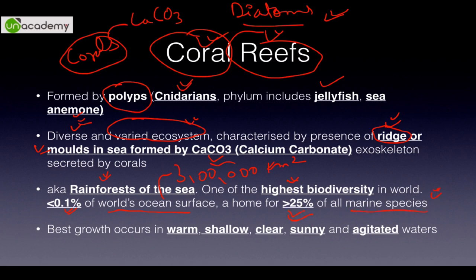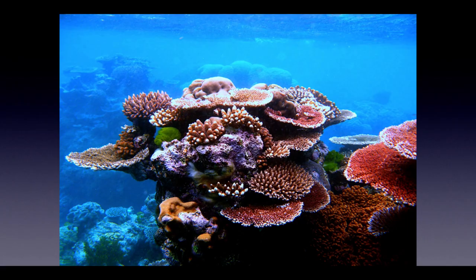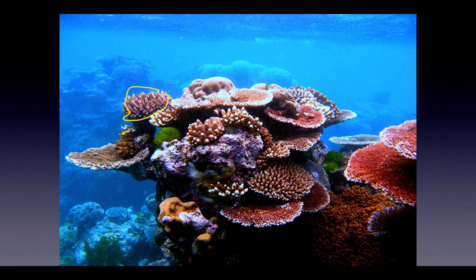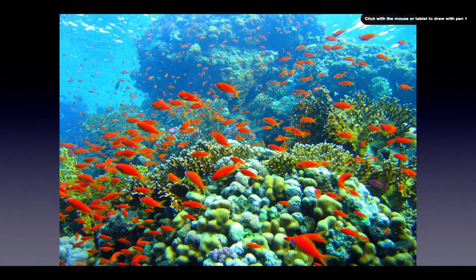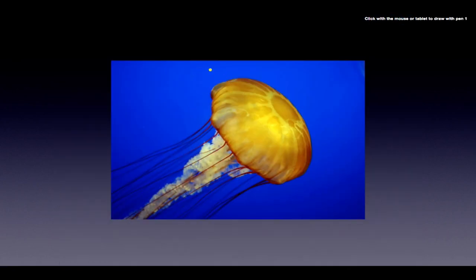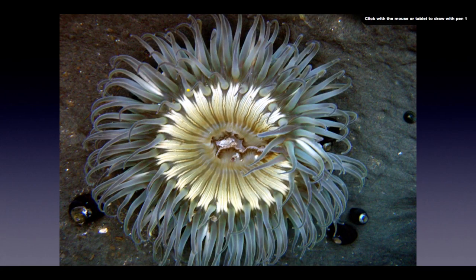The best coral growth occurs in warm, shallow, clear water free of pollution and turbidity, with adequate sunlight and agitated — constantly mixing — water. You can see these beautiful polyps secreting exoskeletons of different colors and hues. The colors come from a combination of zooxanthilae algae providing a brown hue, plus pigmented proteins of the coral itself — producing reds, blues, and greens. This is also an example of jellyfish, found in phylum Cnidaria.